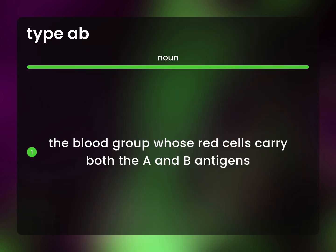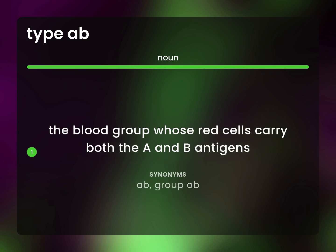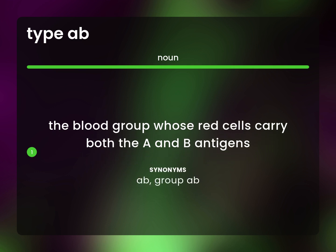The blood group whose red cells carry both the A and B antigens. AB. Group AB.